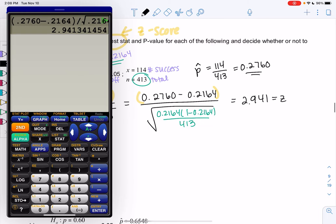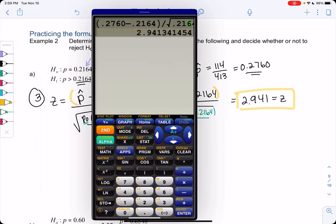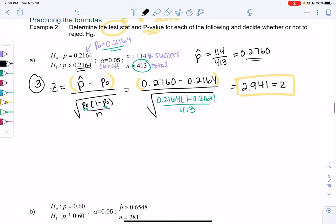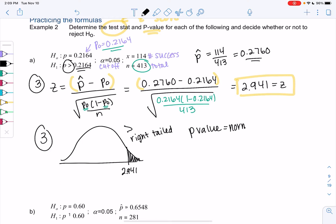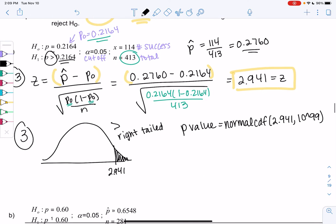So again, that means it's probably strong evidence because it's beyond that two standard deviations, but we're going to do the p-value to assess the risk. So p-value means we draw the normal curve. I'm going to put the z-score of 2.941 on the curve. We're doing a greater than, so I'm going to shade to the right. And then we will do normal CDF. We find the area. So the p-value is the area, so it's normal CDF. My lower is 2.941, and my upper is 10 to the 99 for infinity.